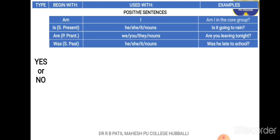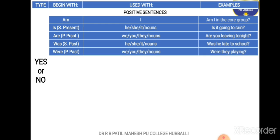The next word is 'was'. 'Was' goes with singular subjects in the past tense, used with he, she, it, and nouns. Example: 'Was he late to school?' Yes or no is the answer. The next word is 'were'. 'Were' goes with plural subjects in the past tense, used with we, you, they, and plural nouns. Example: 'Were they playing?'